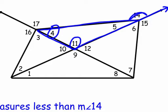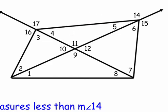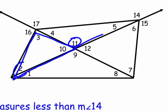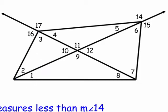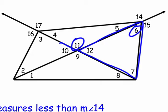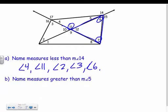Now, angle 11 is itself an exterior angle to another triangle, meaning angle 11 is greater than angle 2 and angle 3. Since angle 14 is greater than angle 11, and angle 11 is greater than angle 2 and angle 3, by the transitive property angle 14 is also greater than angle 2 and angle 3. Angle 11 is also exterior to yet another triangle, so angle 11 is greater than angle 6 and angle 7.